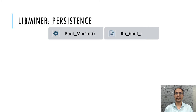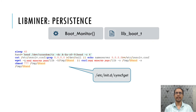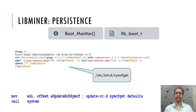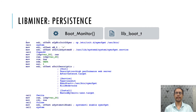For persistence, it executes a boot monitor function which downloads a shell script component. This shell script downloads and executes the LibMiner component. The shell script is placed in the init directory and registered to execute on startup. The same component is also placed in the user bin directory and registered to execute as a systemd service.